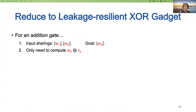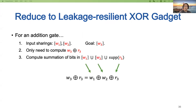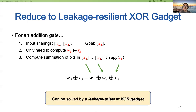For an addition gate, suppose the two input sharings are W₁ and W₂, and the goal is to compute the output sharing W₃. We only need to compute W₃ XOR R₃, since the remaining shares are just the input random bits of the PRG. Observe that W₃ XOR R₃ equals W₁ XOR W₂ XOR R₃. Therefore we only need to compute the summation of bits in the joint support of the sharing of W₁, the sharing of W₂, and the support of R₃. This problem can be solved by using a leakage-tolerant XOR gadget.